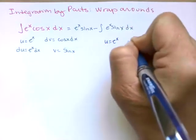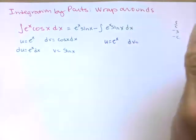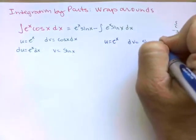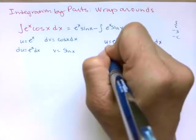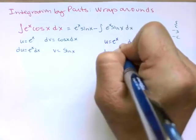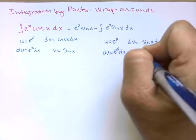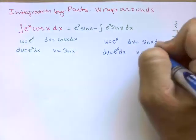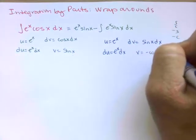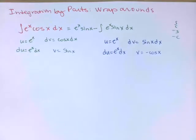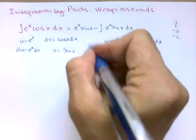We're going to let u equal e to the x, so then dv equals sine x dx, du is e to the x dx, and v is negative cosine x.